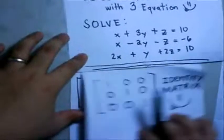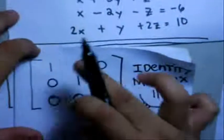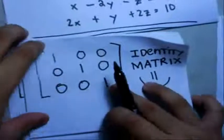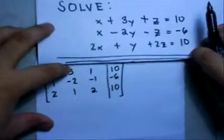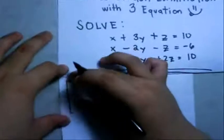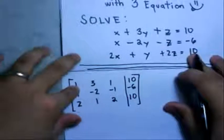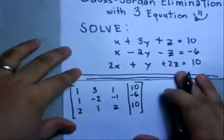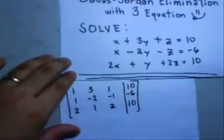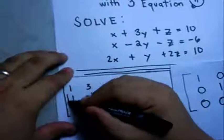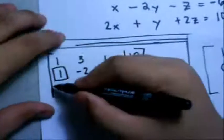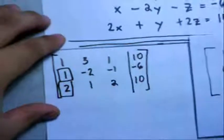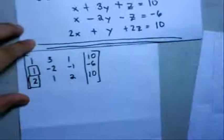The identity matrix looks like this: 1, 0, 0 | 0, 1, 0 | 0, 0, 1 — so we can identify what x, y, and z are. The first thing we do is make the upper left corner into 1. In our case we already have 1, so we skip that step. The next step is to make the first column entries below it zero.